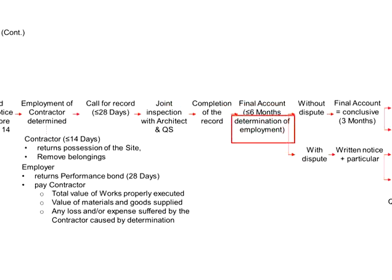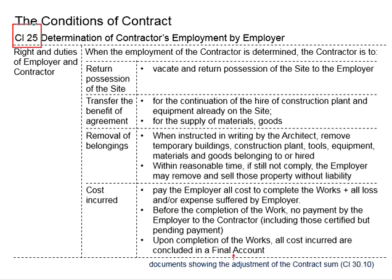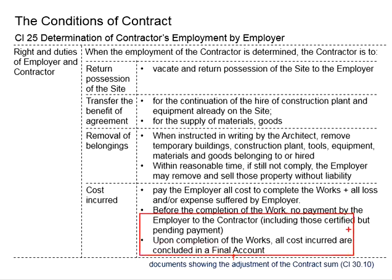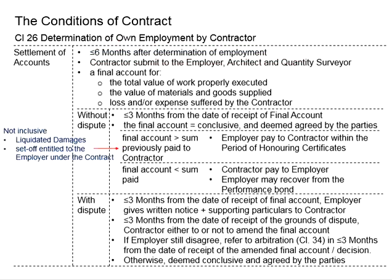In this case, the contractor does not need to wait until the completion of the work to have the amount settled. This is different from Clause 25, where before the completion of the work no payment should be made by the employer to the contractor. Under Clause 25, when the contractor is at fault, the employer will need to hire somebody else to proceed with the work until completion, and then the relevant amount is settled. However, under Clause 26, when the employer is at default, the contractor does not need to wait until the employer completes the work by hiring somebody else to have the account settled.